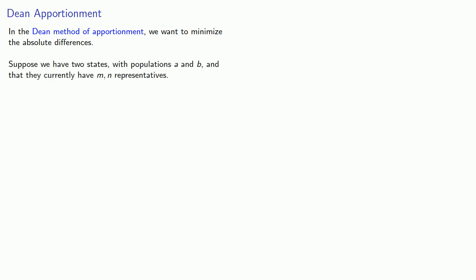Let's put our ideas on apportionment together. In the Dean method of apportionment, we want to minimize the absolute differences. Suppose we have two states with populations A and B, and that they currently have M and N representatives. If we want to assign one more representative, which state should it go to?